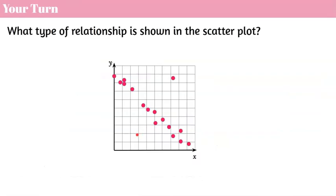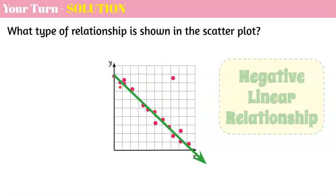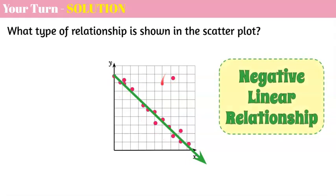Now it's your turn. I'd like you to pause the video and determine what type of relationship is shown in the scatterplot. Come back and hit play when you're ready. Welcome back. Here's our solution: if I drew a line, we can see that it's forming a negative linear relationship. Once in a while you'll have a data point or two that isn't completely with all the other data, but when most of the data is forming that trend, we call this a negative linear relationship — because the line is sloping down from left to right. If I wrote the equation of this line, it would have a negative slope.